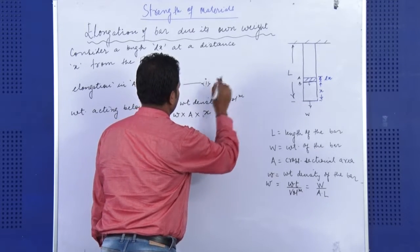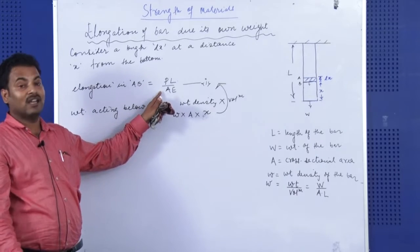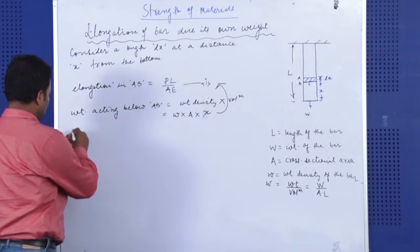We need to substitute this value over here in order to find out the elongation of the elementary length AB.